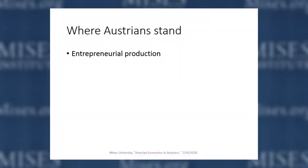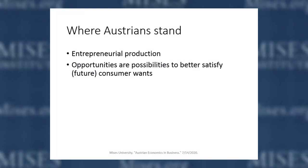So where do Austrians stand in all this? We're different in every possible way. We really stand out as unique, and really as not at all economists in the mainstream sense. Production to us is not the black box — it's entrepreneurial. It's trying to figure out how to produce more value than anybody else has been doing, or create more satisfaction using the resources available, figure out a new way of doing it, a better way of doing it. We talk about opportunities as the possibility of satisfying consumers in their future wants.